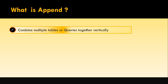Let's say you have multiple files and you need to combine them into a single file. The data given by your management is not available in a single file — it is available in multiple files. In that case, you need to combine all the files into a single file. When you do this kind of appending, what we do is combine multiple tables or queries together vertically. We are going to stack one data set on top of another data set.